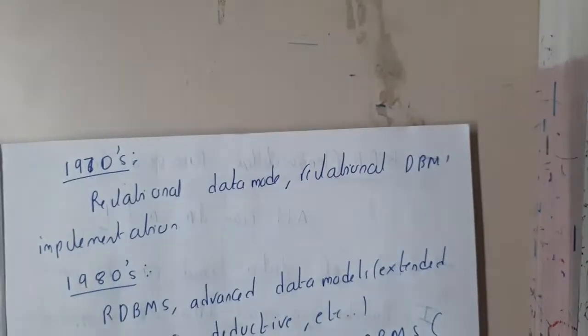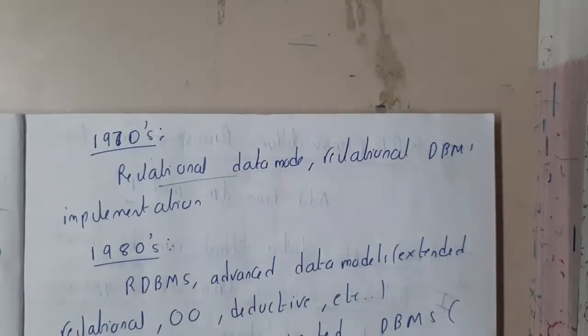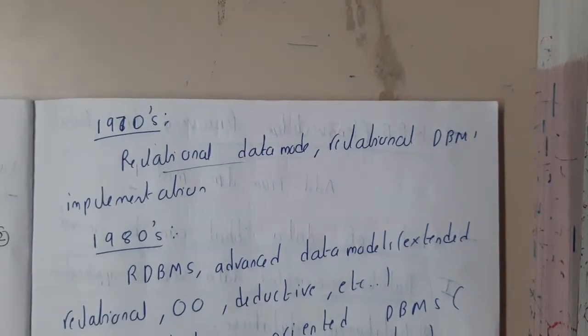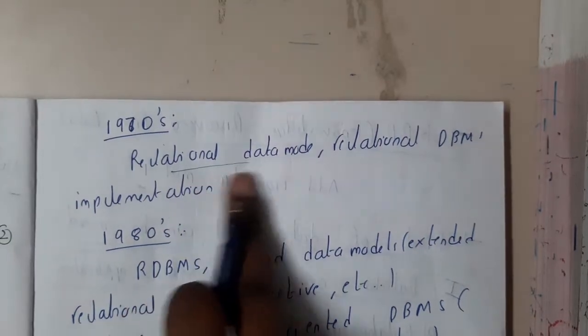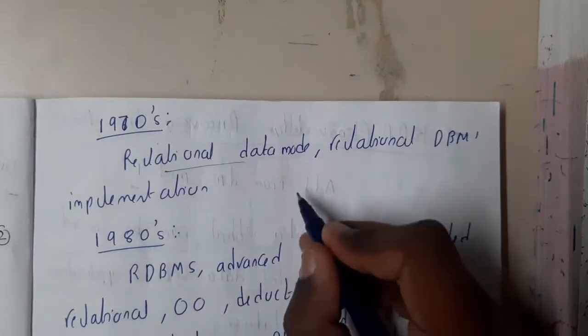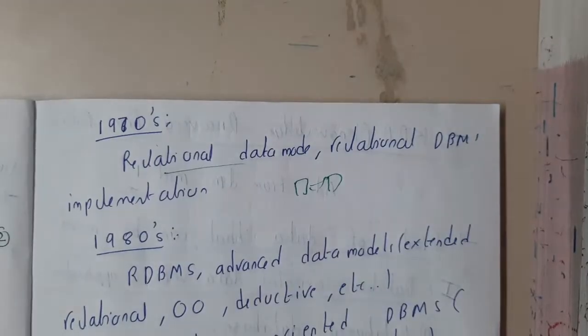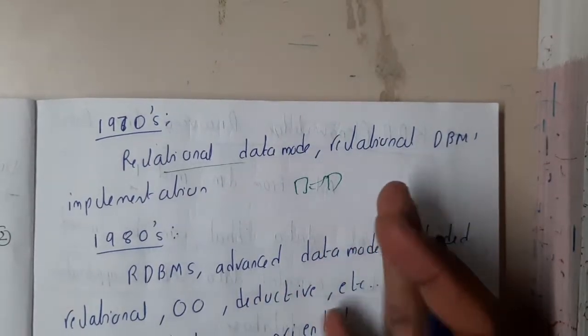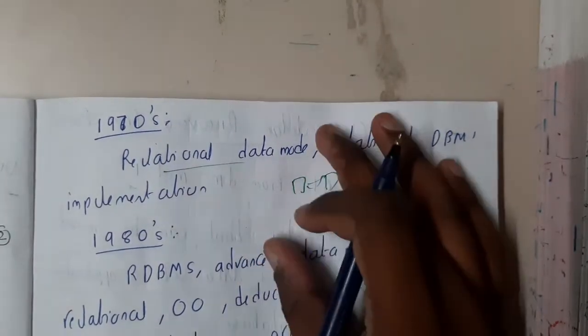So in 1970s they started using the relational databases, which we are using till nowadays. Relational databases - the difference is nothing but here the tables can maintain some relation. So previously there is no relation, each table is separate, but here there is some relation between them.